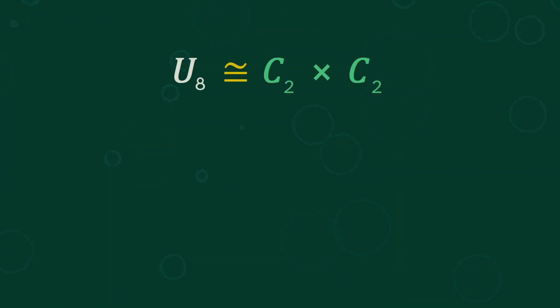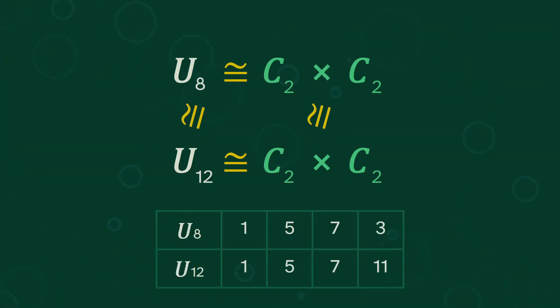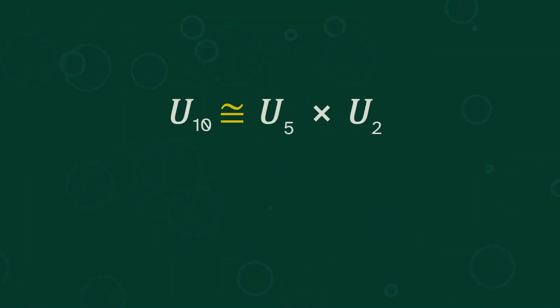We just saw that U of 8 is a 2 cycle times a 2 cycle. But earlier we saw the same was true for U of 12. So because these are the same, U of 8 is isomorphic to U of 12. They have the exact same structure. And we can map between them just by changing 3 to 11. For another example, U of 10 is U of 5 times U of 2. And U of 5 is a 4 cycle. U of 2 is a 1 cycle. But that 1 cycle is trivial. It doesn't hold any information. So we can just kind of ignore these. And we see that U of 10 is isomorphic to U of 5.